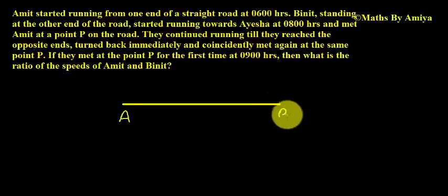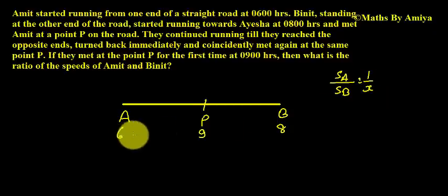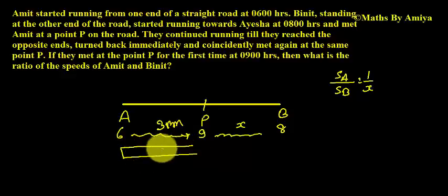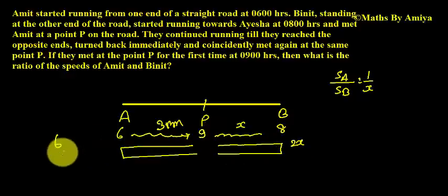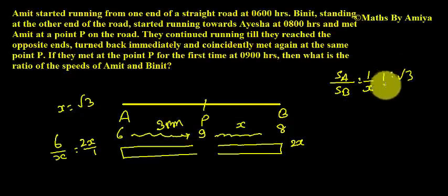From this end Amit starts, from this end Beneath starts. Amit starts at 6, Beneath starts at 8. The meeting point is P and they meet at 9. Say the speed ratio of Amit to Beneath is 1 is to X — that is 1 km/hr and X km/hr. In 3 hours Amit traverses 3 km, and in 1 hour Beneath traverses X km. Setting the distance-upon-speed equations equal, we get 6 by X equals 2X, so X becomes root 3. The ratio is 1 is to root 3. This is our answer.